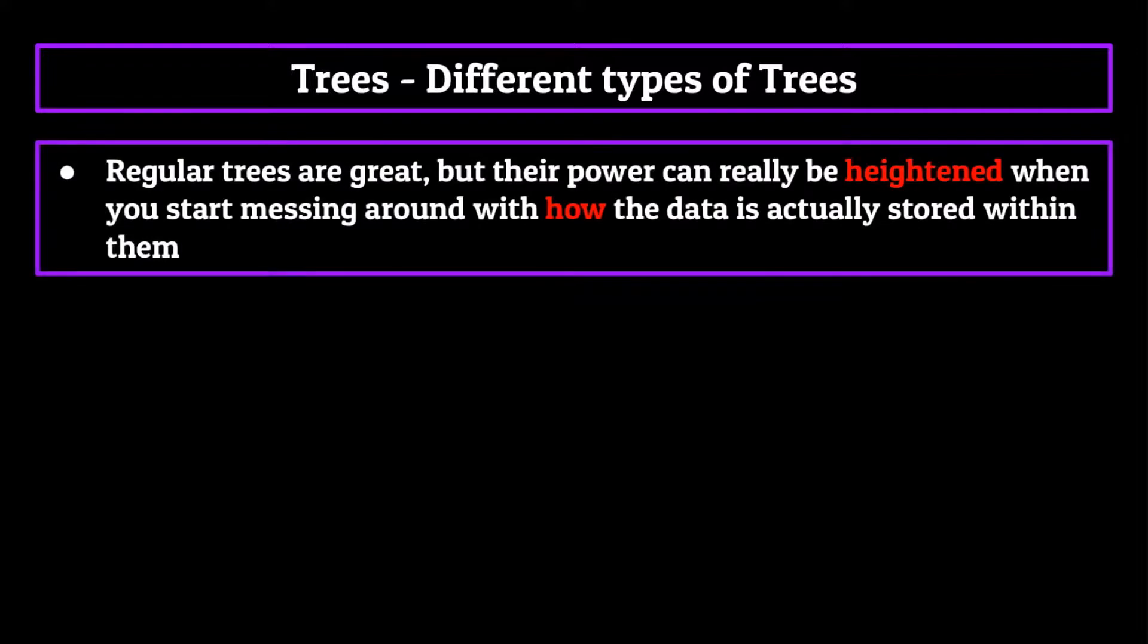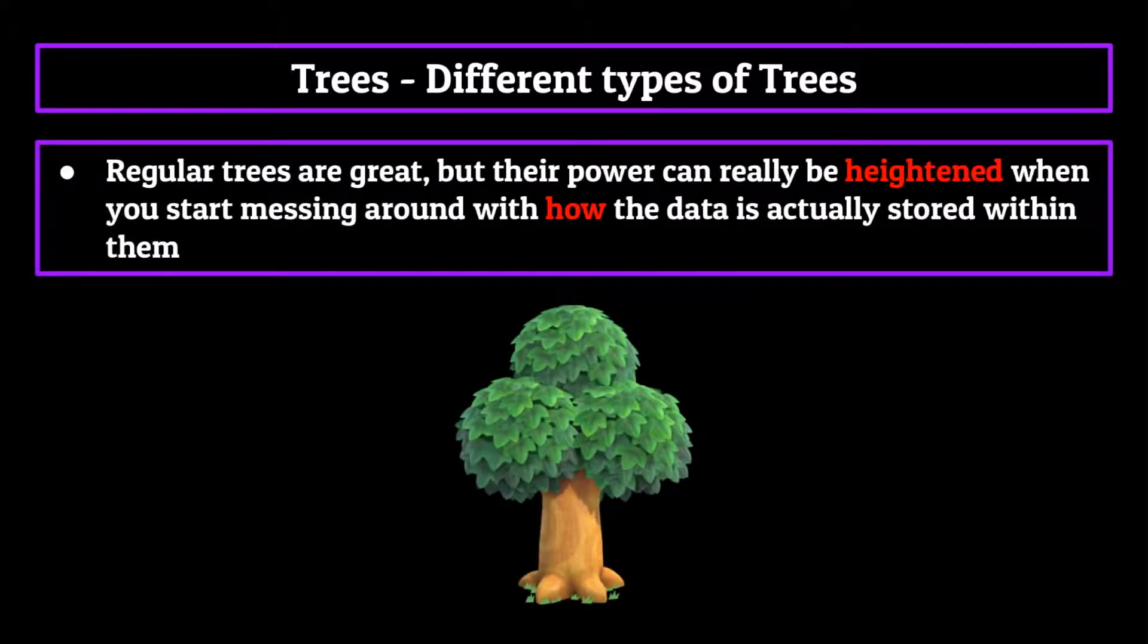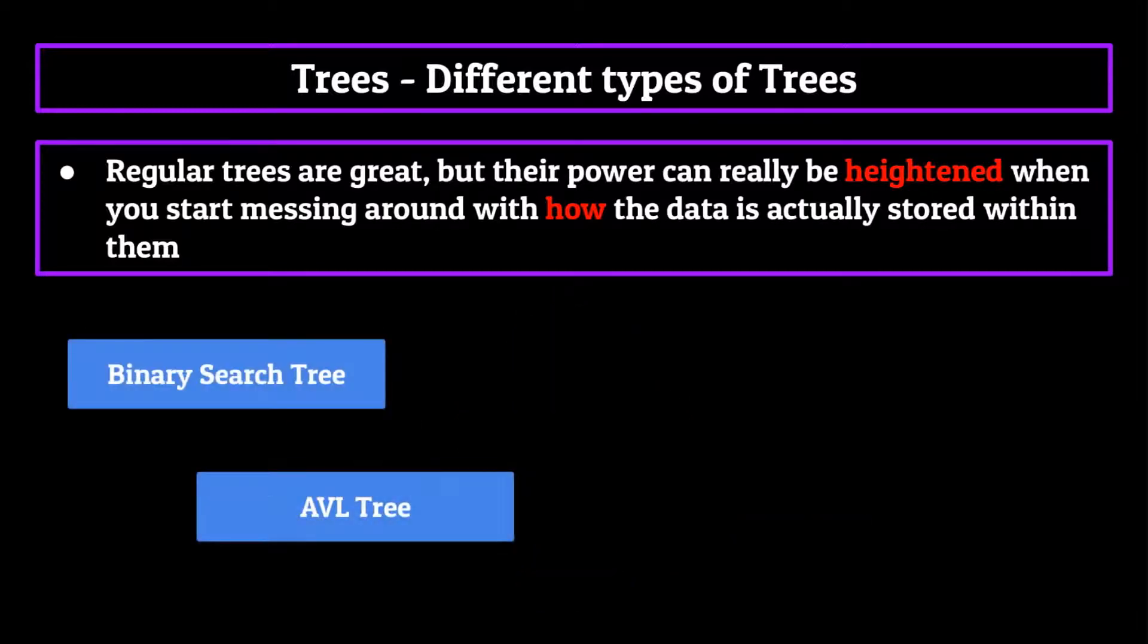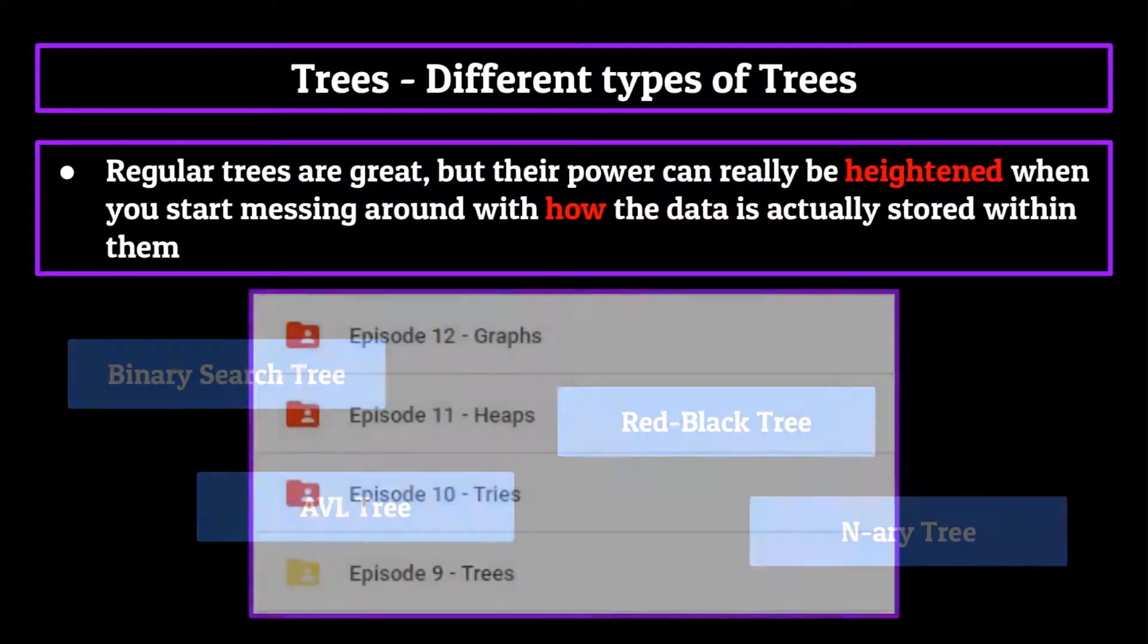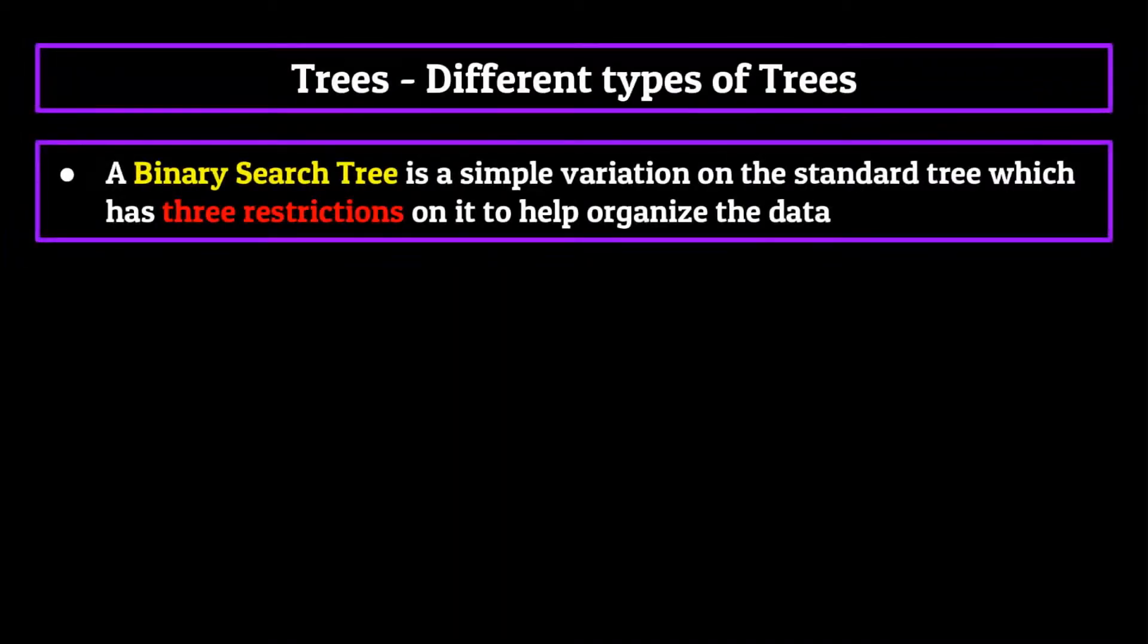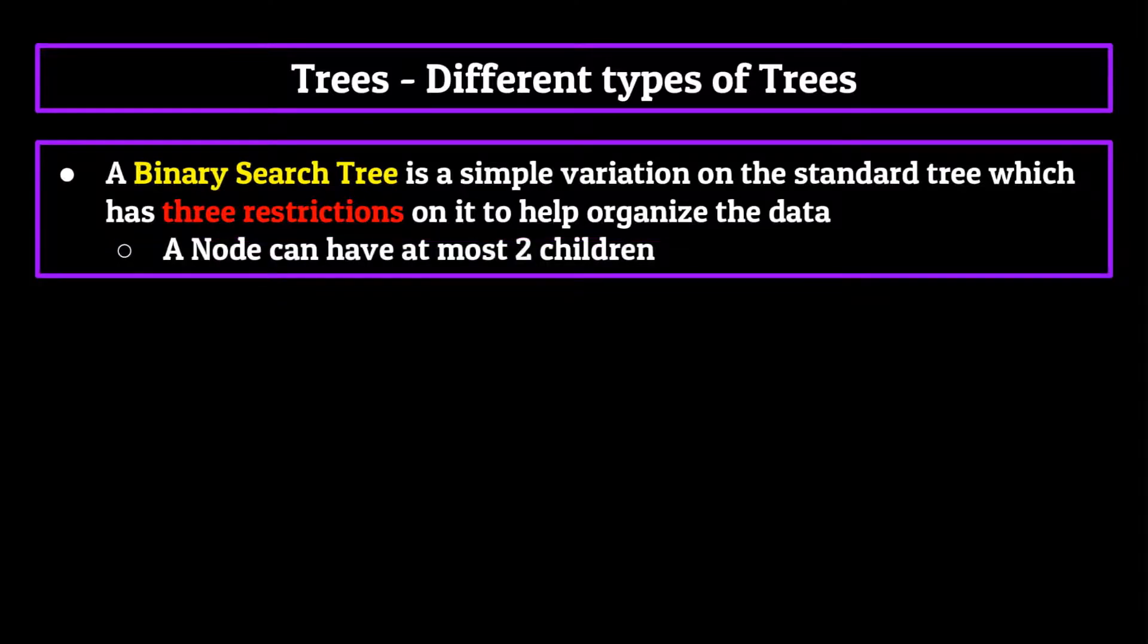Anyways, moving on to types of trees. Now, regular trees are great, but their power can really be heightened when you start messing around with how the data is actually stored within them. By imposing rules and restrictions on what type of data is stored within a tree, and also where, we can effectively use the tree structure to its full potential. I could talk about the different types of trees for a long time, so long that actually a few of them have their own episodes coming up in this series. But for now, I just want to cover a popular variant, the binary search tree. A binary search tree is a simple variation on the standard tree which has three restrictions on it to help organize the data.